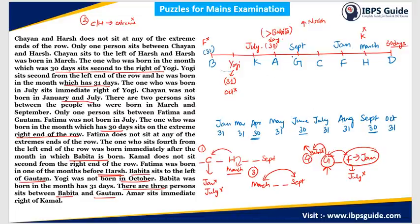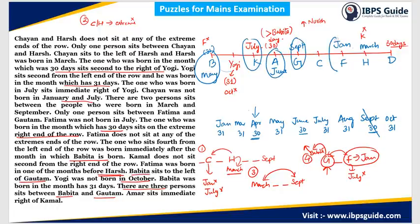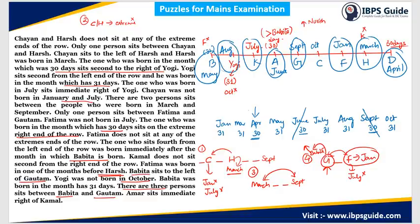Now assigning birth months: position 4 must be a 30-day month born immediately after Bhavita's month. The remaining 30-day months are April, June, and September — September is taken. If position 4 is June, then Bhavita is born in May. If April, Bhavita would need March which is taken by Harsh — so that's impossible. Therefore position 4 is June and Bhavita is born in May. Position 9 also needs a 30-day month, leaving April for another position. Yogi is not born in October, so Yogi gets August and Chayan gets October.